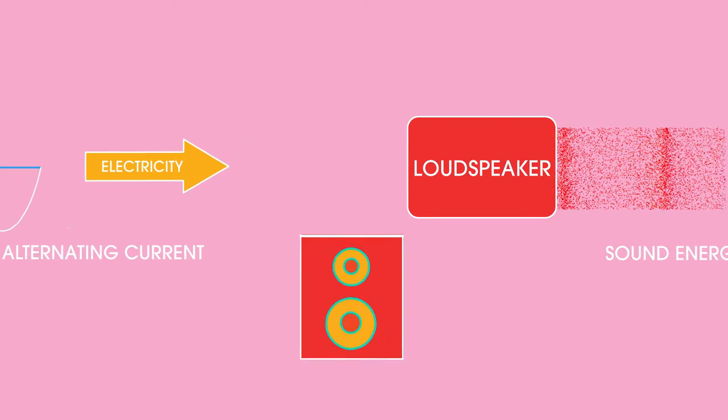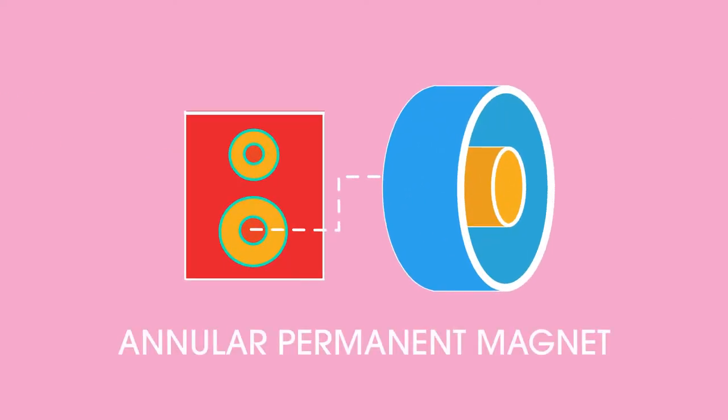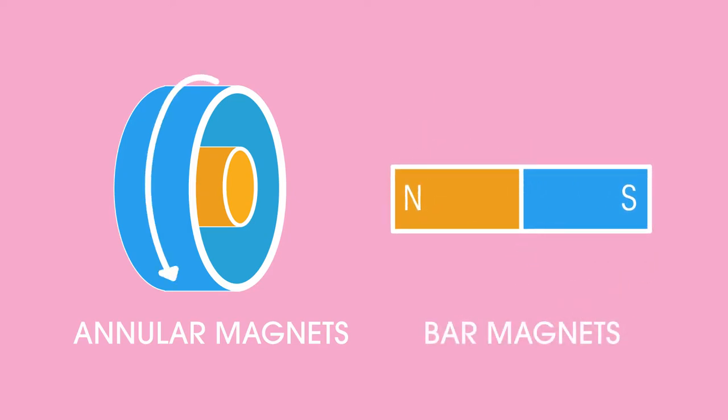Let's look at a simple loudspeaker first. At the heart of the loudspeaker is an annular permanent magnet, not the shape that you are used to seeing. Annular magnets are not bar, but ring-shaped.